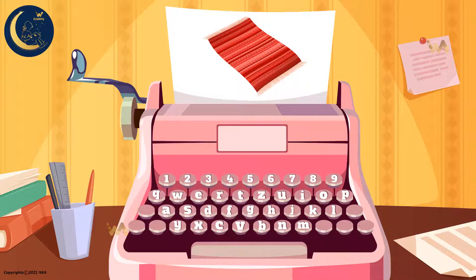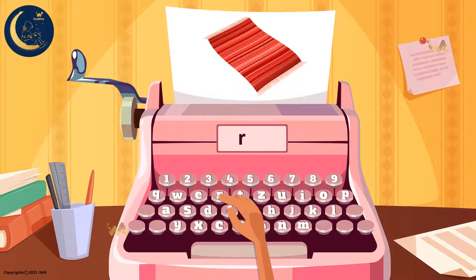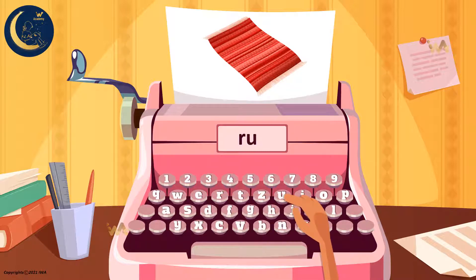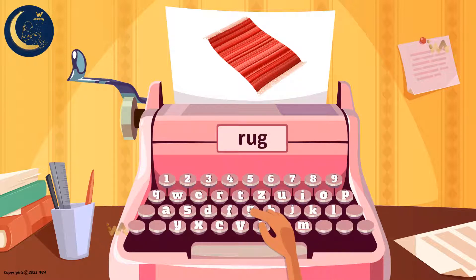The first sound is r. The second sound is uh. The last sound is g. So the letters r, u, and g make the word rug.